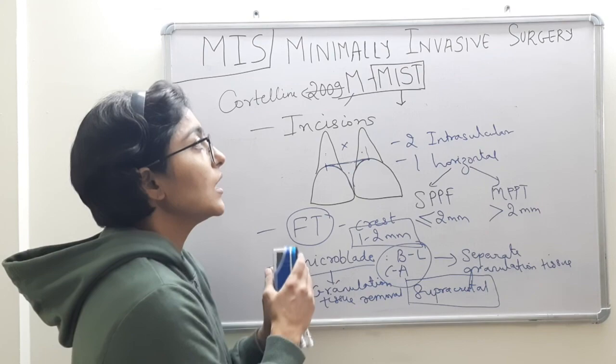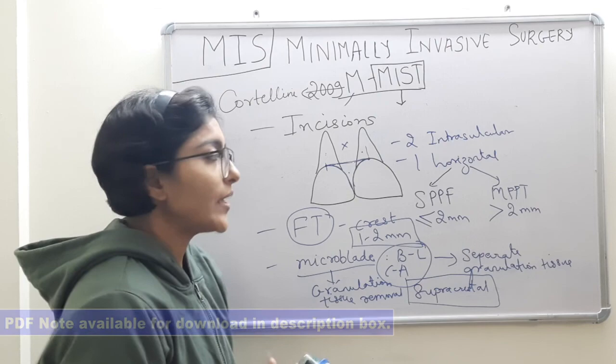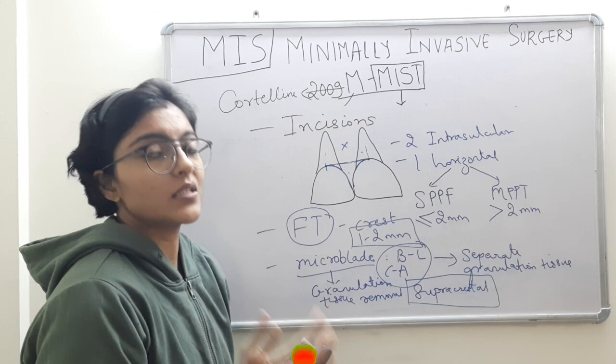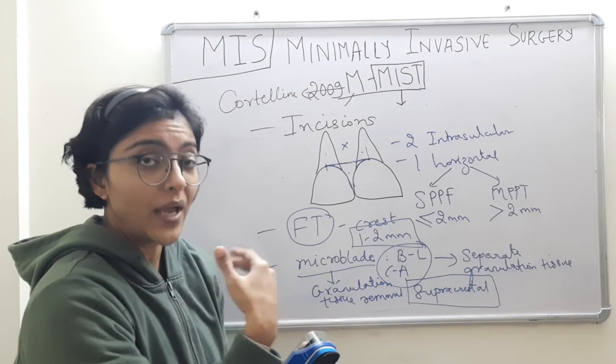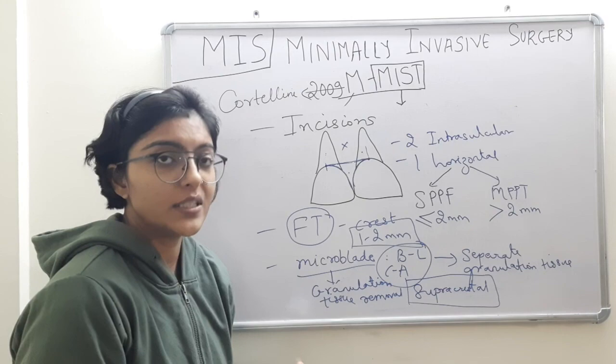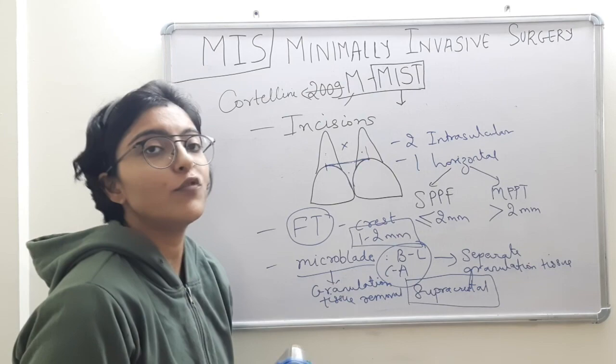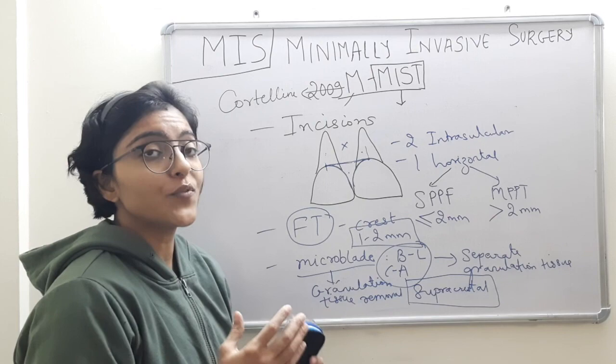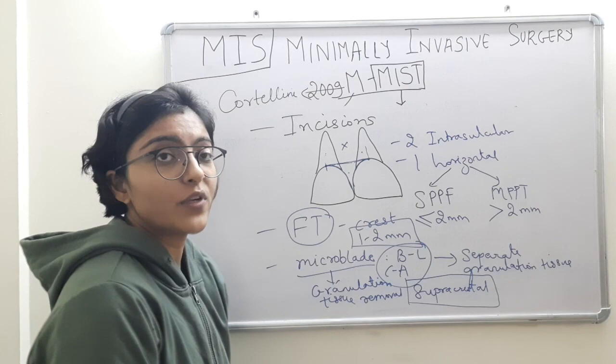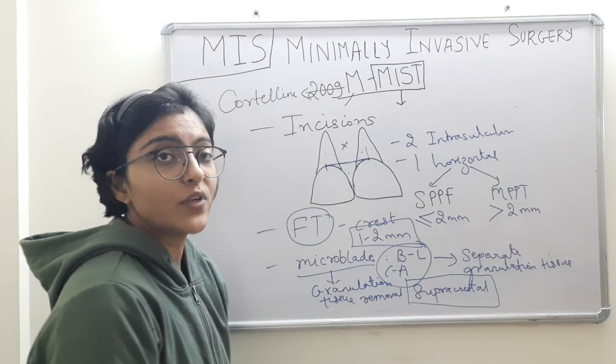This is how Modified Minimally Invasive Surgical Technique is completed. A quick summary: MMIST means modification of MIST. The two modifications compared to MIST are: first, a single flap is manipulated, preferably buccal; and second, the interdental papilla is preserved intact, undisturbed, and undetached. These are the two main modifications of MMIST compared to the original MIST technique.